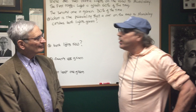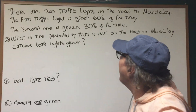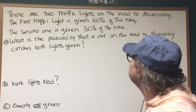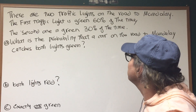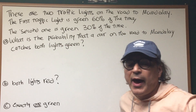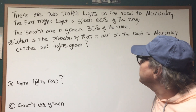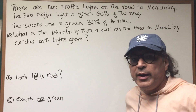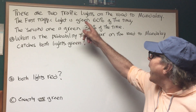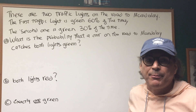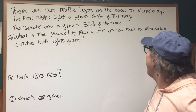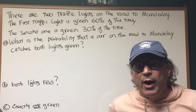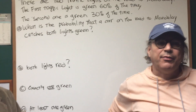Professor Blois is going to walk us through a problem involving two traffic lights. It says there are two traffic lights on the road to Mandalay. The first traffic light is green 60% of the time. The second one is green 30% of the time. We want to know the probability that a car on this road catches both green lights. We'll look at parts A, B, C, and D, where C and D are a bit trickier than the first two.